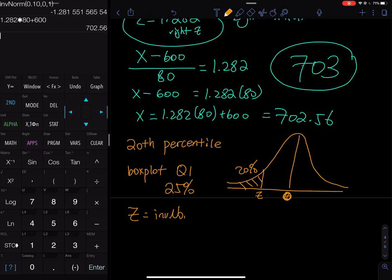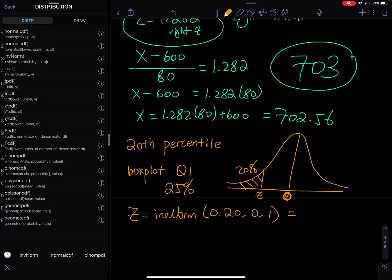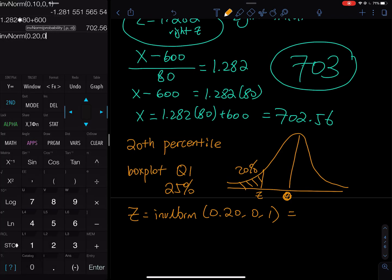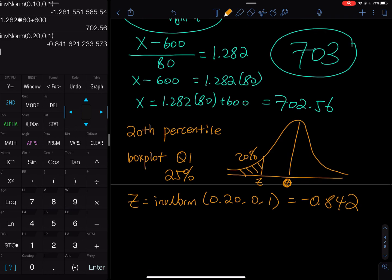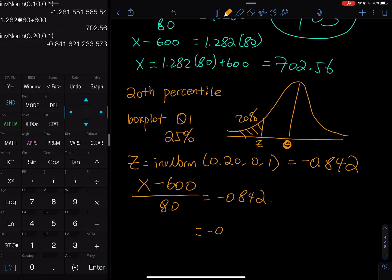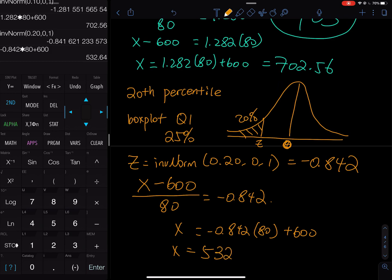How do you find the Z? The Z equals inverse norm, 20 percent, 0, 1. So this time, we take the negative. Second vars, inverse norm, 20 percent, 0, 1. Then you have negative 0.842. That is your standardized score, not your raw score. How do you get the raw score? You take X, which is the score you need, subtract the mean, divided by 80. You get negative 0.842. Then you solve for X. You take negative 0.842, multiply the denominator, you add 600 to it. Then you get your X. So what is that equal to? Negative 0.842, you multiply 80, and you add 600 to it. That equals 532.64. So I'll round that up to 533 points. That is your raw score.